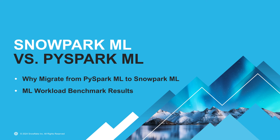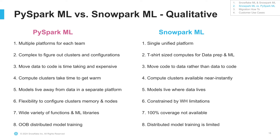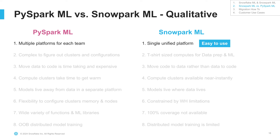Now let's compare SnowparkML with PySparkML. I have about eight broad points. The first is platform perspective: when your models sit in managed PySpark but data sits in Snowflake, you have to manage multiple platforms — IAMs, RBACs, data movement. With Snowflake it's one single unified platform, which is very easy to use. My three main pointers are cost, speed, and ease of use, and I'll keep coming back to those. Second, configuring clusters and dependencies with PySpark is very difficult, whereas with SnowparkML you use the same T-shirt-size warehouses — XS, S, M, L — that you're used to for SQL queries.